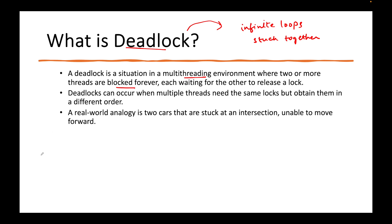There is a thread T1 waiting for T2 to release a resource, and at the same time T2 is also waiting for T1 to release. So in order for T1 to get the resource, it is waiting on T2. And T2 is saying: 'No, I want the resource. If I want to give you the resource first, you have to give me the resource.'